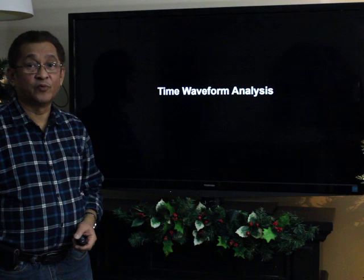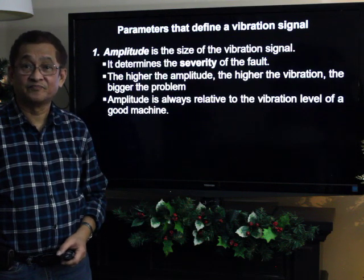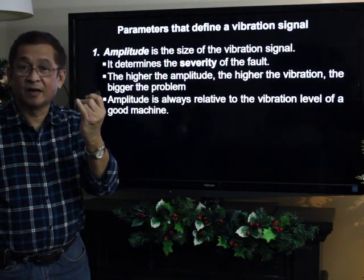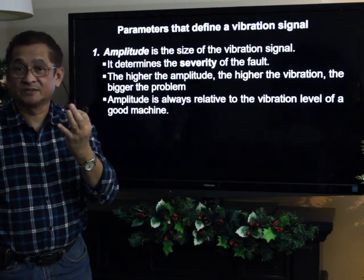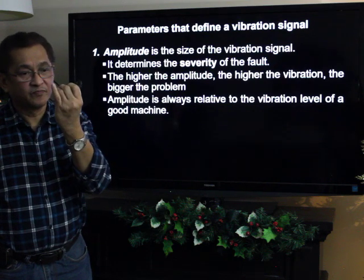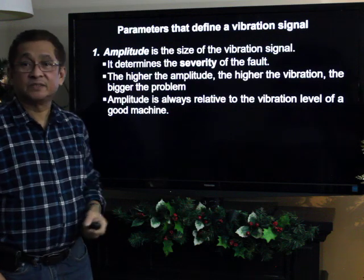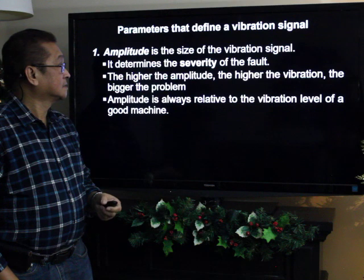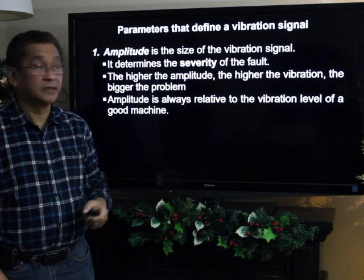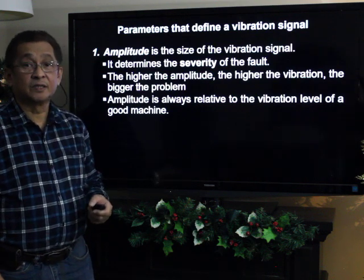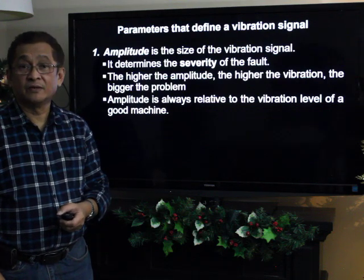Let's start first with the time waveform analysis. There are three parameters that define a vibration signal: amplitude, frequency, and phase. Amplitude is the size of the vibration signal — it is the severity of the fault. The higher the amplitude, the higher the vibration, the greater is the problem. Amplitude is always relative to the vibration level of a good machine.